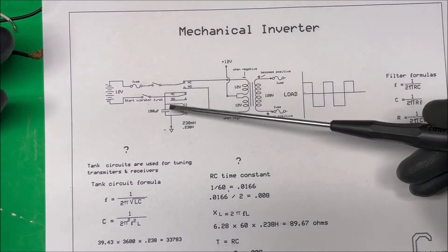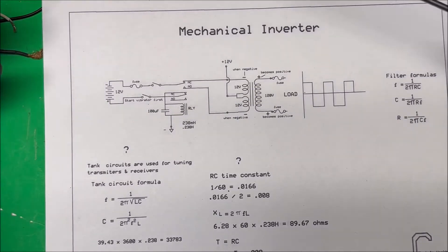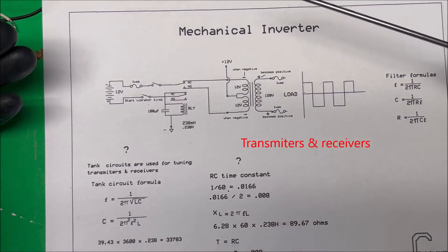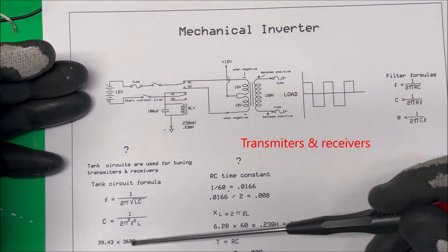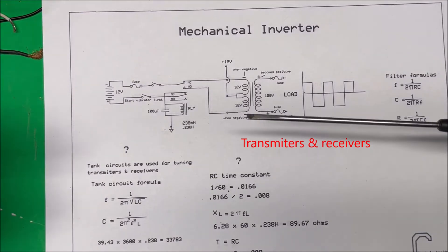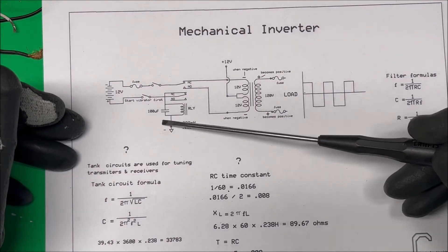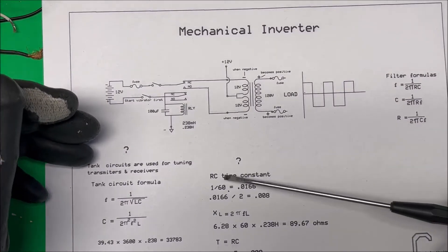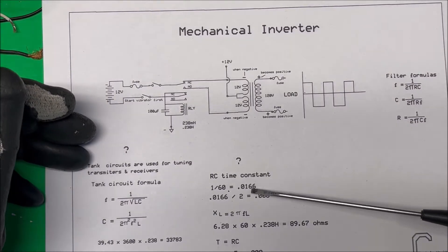I looked at this and said, well we've got a capacitor and an inductor - it looks like a tank circuit. They use those for tuning transistors and receivers. So I did the formula for that and it worked out to about 30 microfarads capacitor.